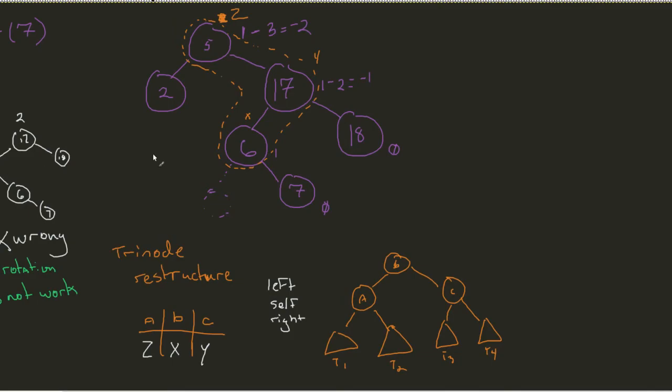In this case, we see that by doing a tri-node restructure, we are going to make our X the new root node. We're going to make Y our right child. We're going to make our Z our left child.